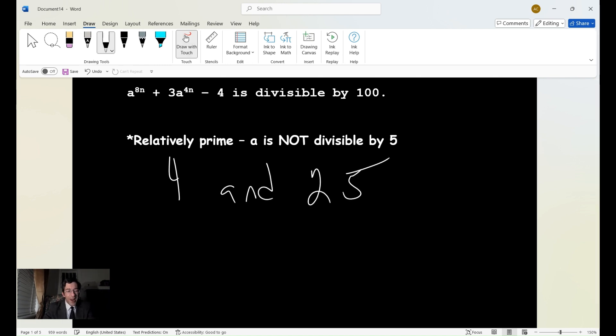We're talking about relatively prime. In other words, 4 and 25 have no common factors other than 1. But their product, the product of 4 and 25 is 100.